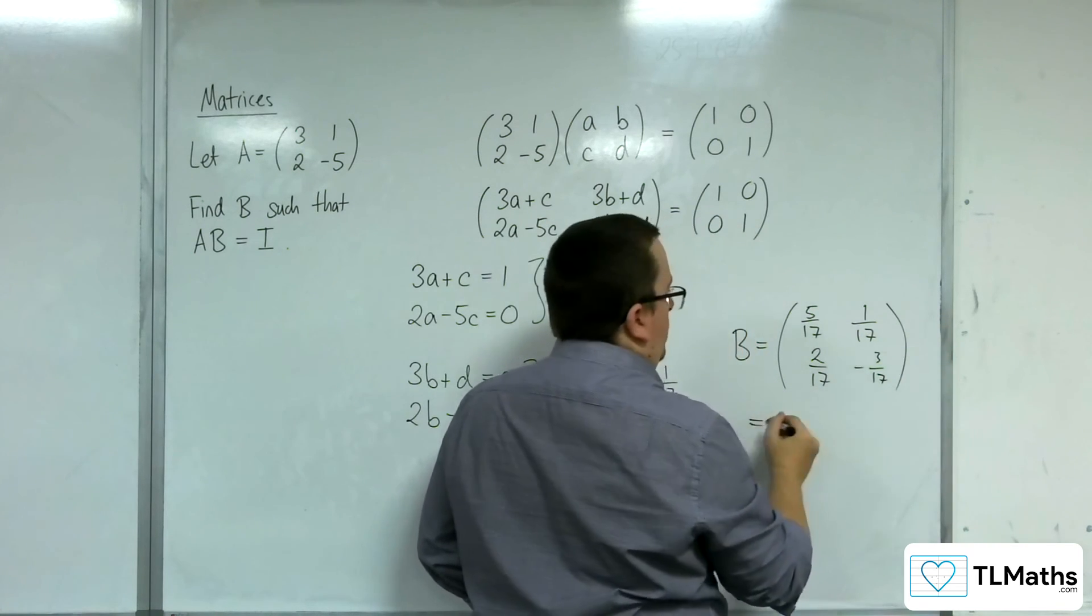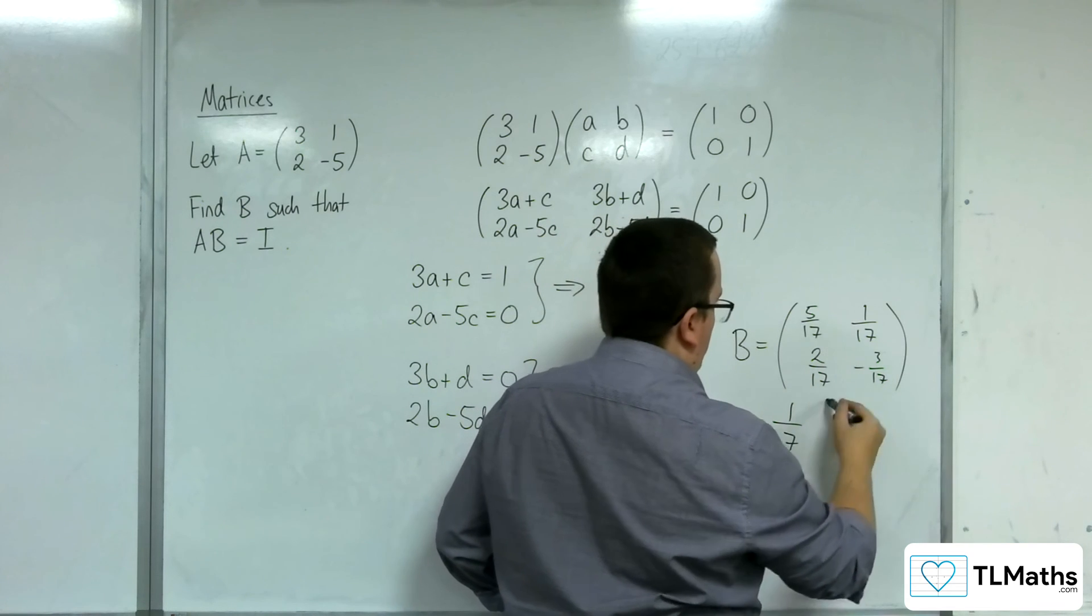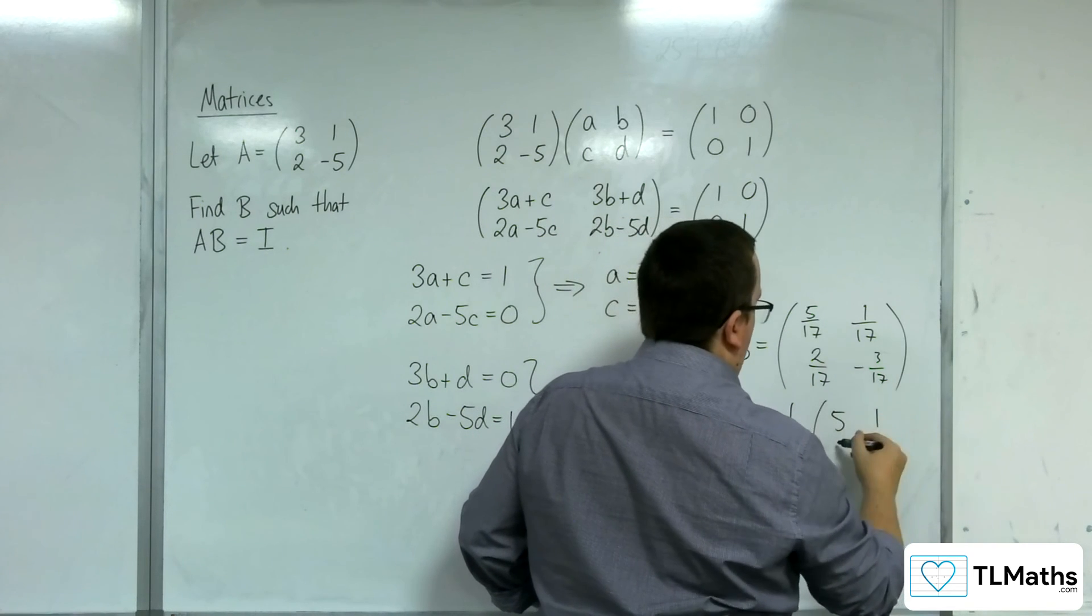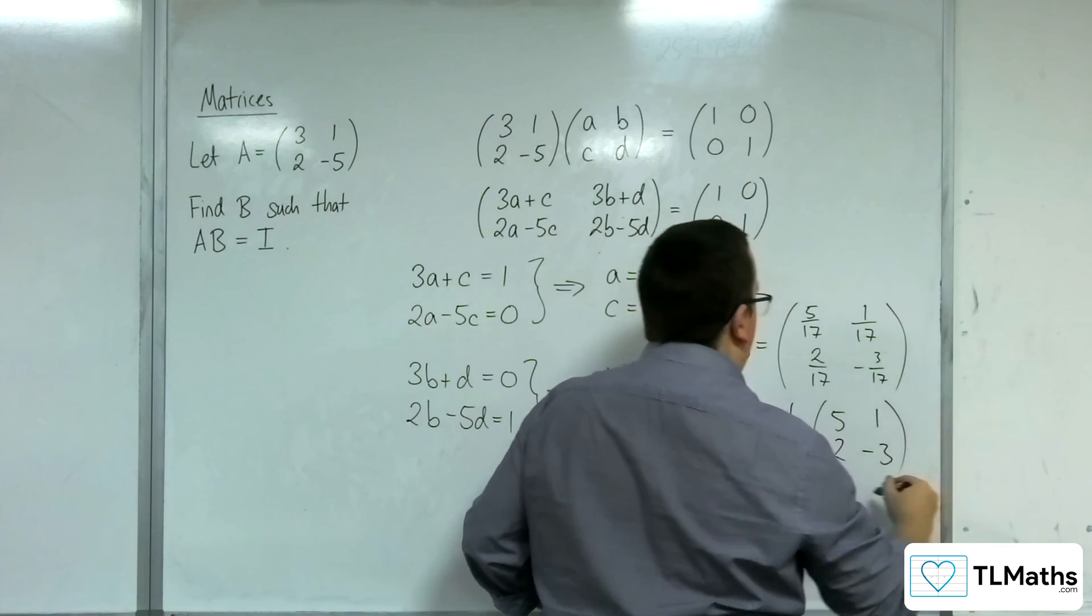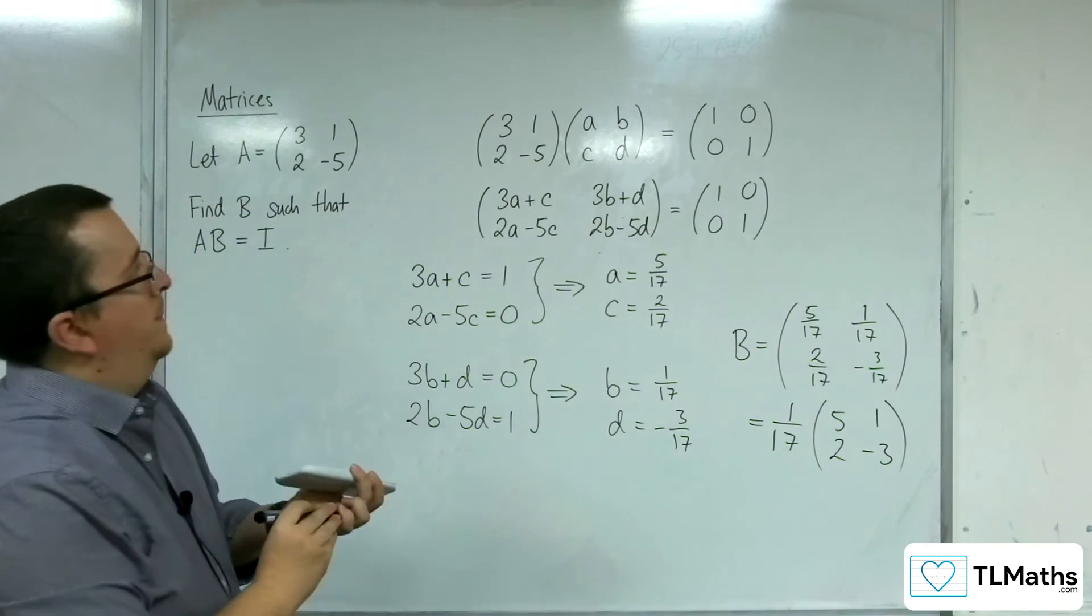Now you can factor the 17th out if you like, the 1 over 17, and then we've got 5, 1, 2, negative 3.